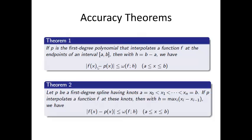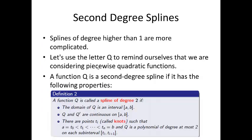Now, let's take a look at second degree splines. Splines of a degree higher than one are a bit more complicated, and we're now going to take a look at quadratic splines. So, we'll use the letter q to remind ourselves that we're considering piecewise quadratic functions. Function q is a second degree quadratic spline if it has the following properties. The domain of q is an interval [a,b]. q and q' are continuous on this interval [a,b]. And there are points t sub i called knots, such that a is equal to t0, which is less than t1, less than t2, all the way to tn, and tn is equal to b.